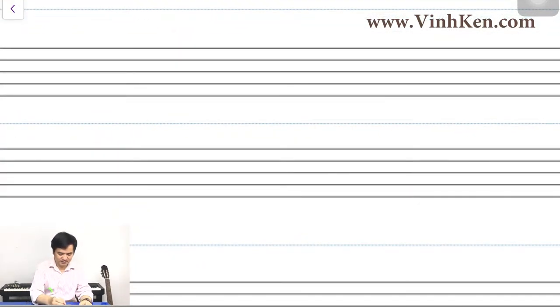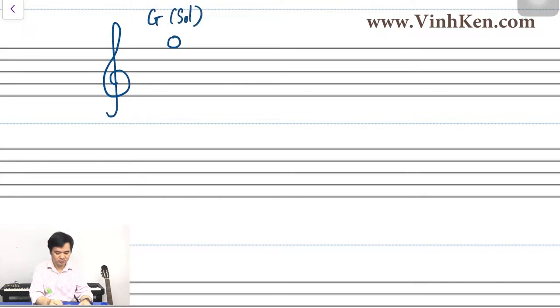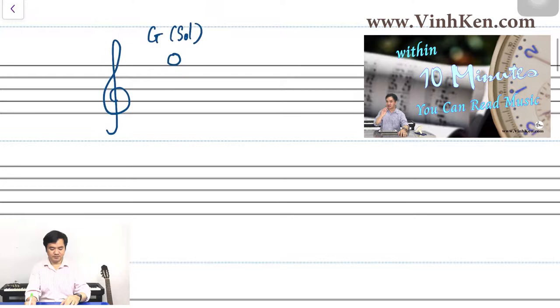So how do they look? For example, I have the staff here. Let me draw the treble clef. Now I have the note above the staff, like this. This note is G, or Sol. If you don't know how I recognize the note name, please watch my previous video — I put the link in the description for you. Okay, so this is G or Sol.